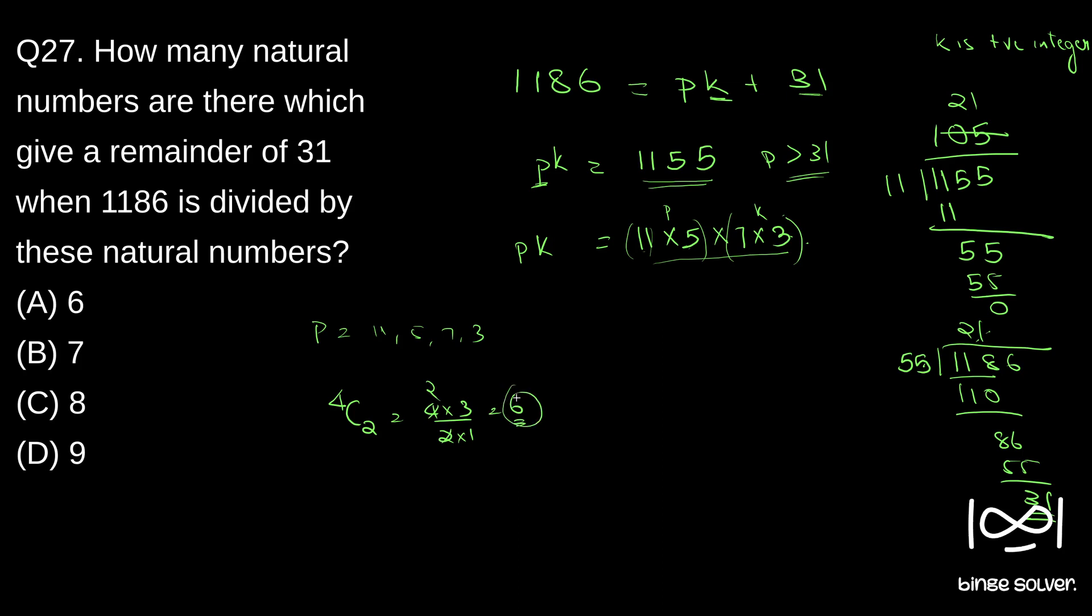We have 6 combination out of the picking any two will give 6 combination. But if you notice, 5 into 3 is 15. That is less than 31. And 7 into 3 is 21. That is also less than 31. If you pick any two combinations, two of them will be less than 31. So that has to be removed. So 6 minus 2, 4. So picking 2 will give us 4 valid cases for, 4 valid, 4 valid values for P.